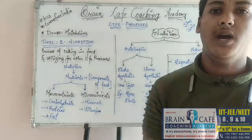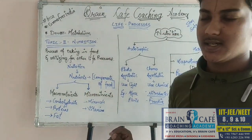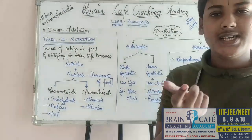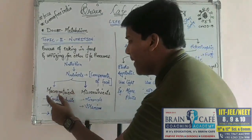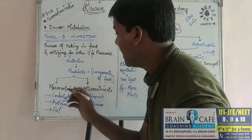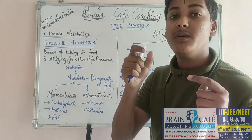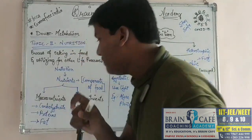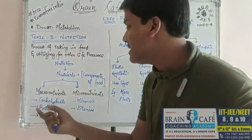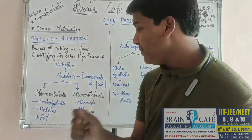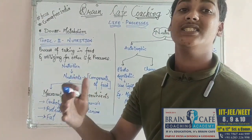Nutrients are broadly divided into two parts: first, macronutrients, and second, micronutrients. Macronutrients are nutrients required by your body in large amounts — for example, carbohydrates, proteins, and fats. These three nutrients are needed by your body in large amounts.